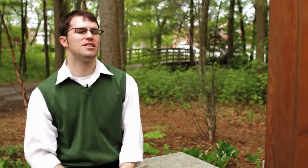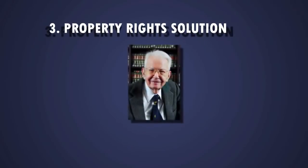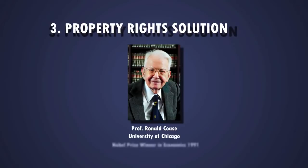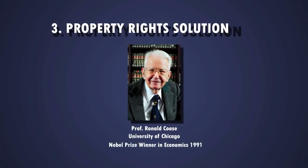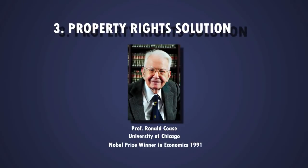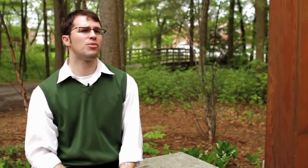The third broad way to address externalities is the property rights solution, suggested by economist Ronald Coase. He said if property is well defined, divisible, and defendable, and negotiation costs or transaction costs are low, simply by assigning the property right we can overcome the externality. These are the three characteristics required for a fully functioning property rights solution.